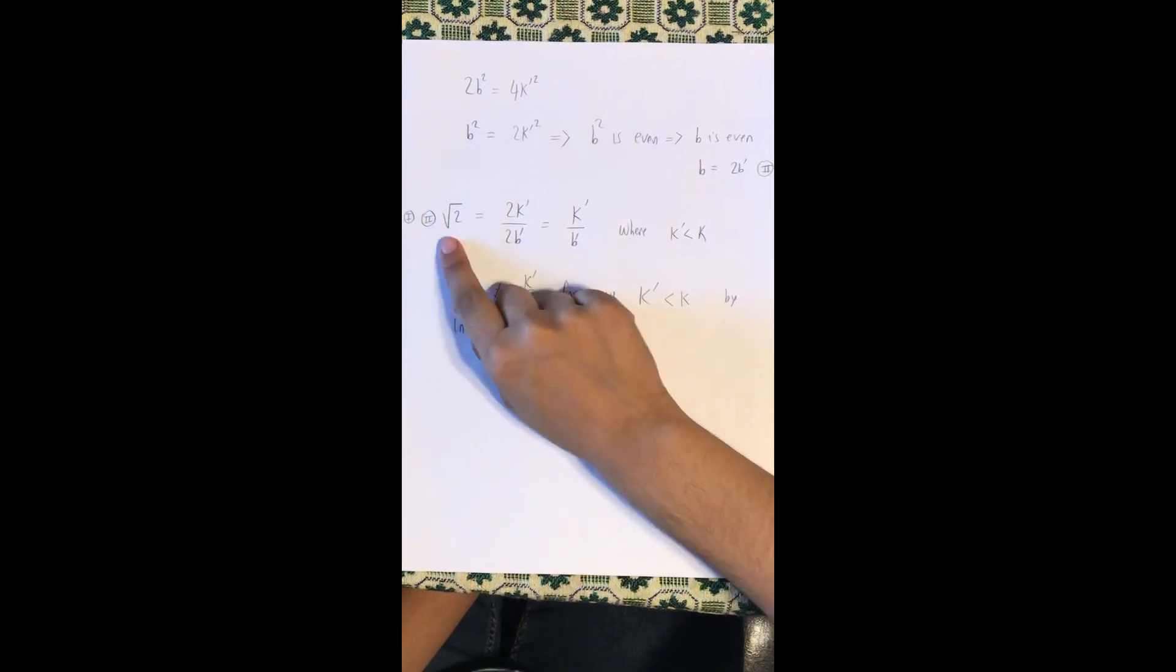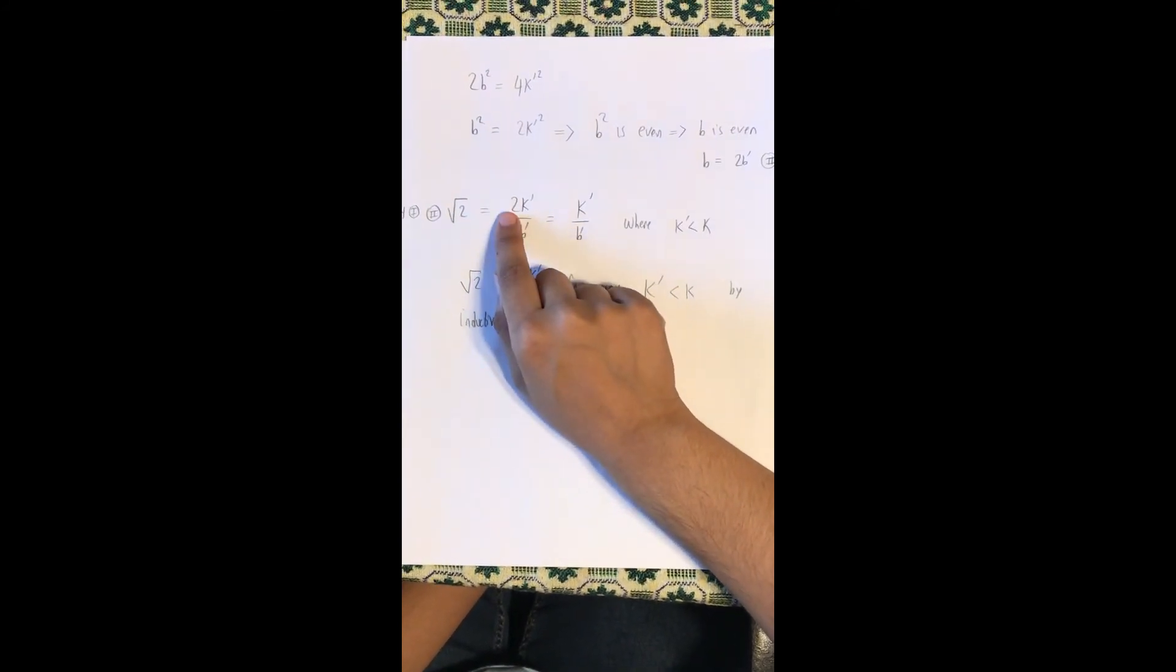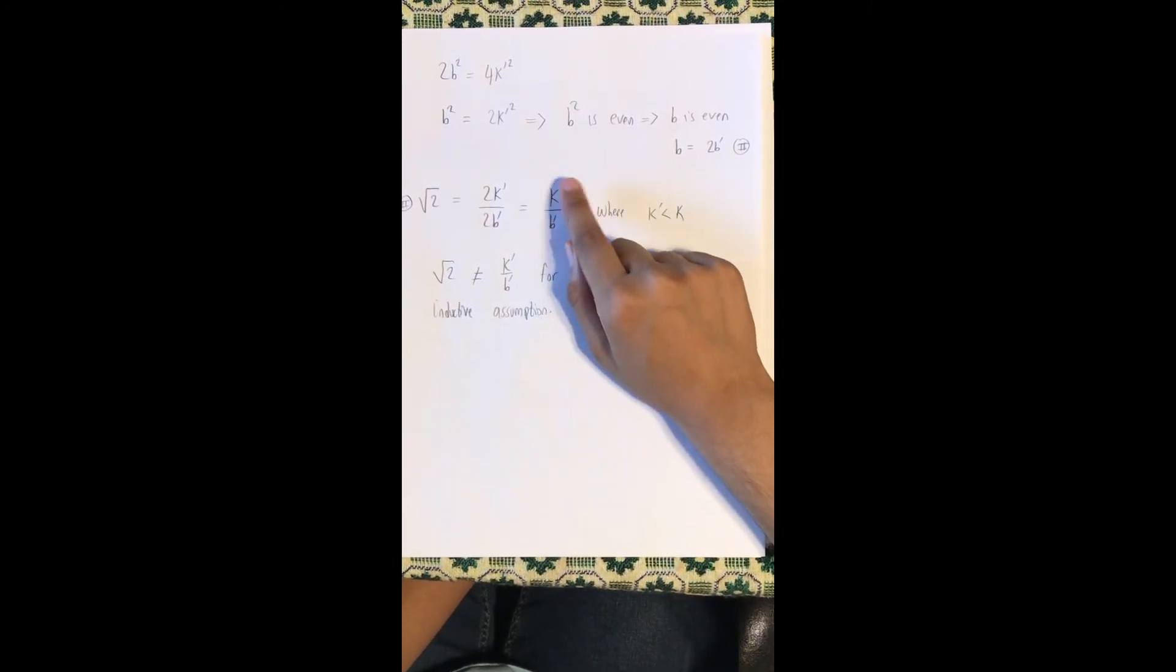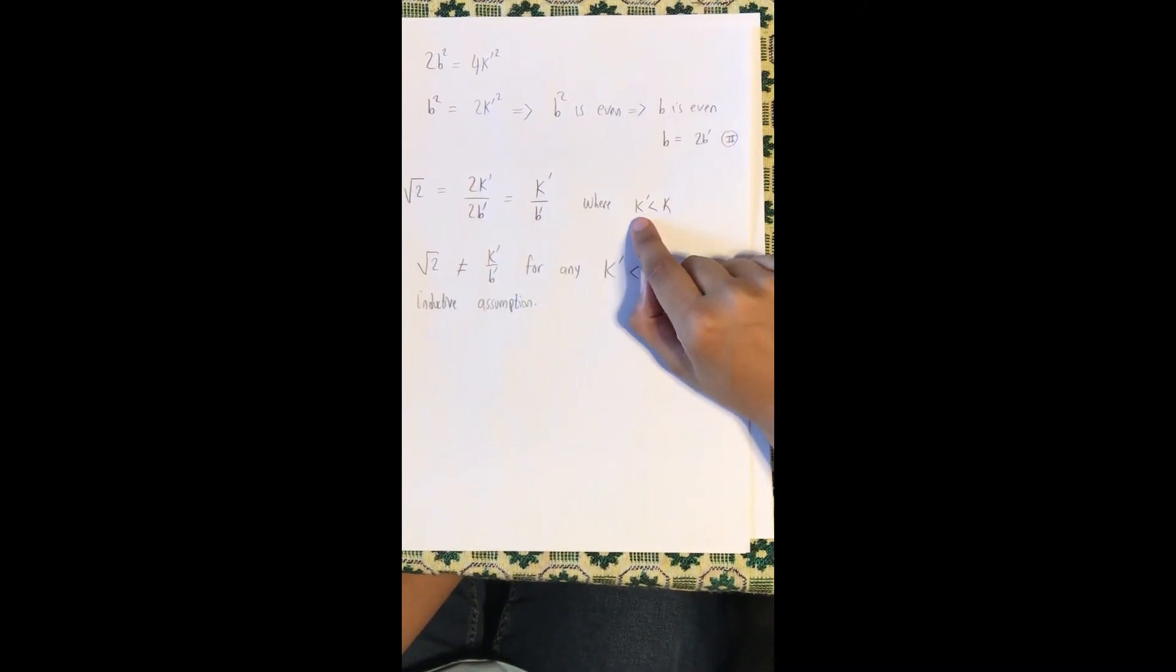Using statements 1 and 2, square root of 2 is equal to 2k prime over 2b prime, which is equal to k prime over b prime, where k prime is less than k.